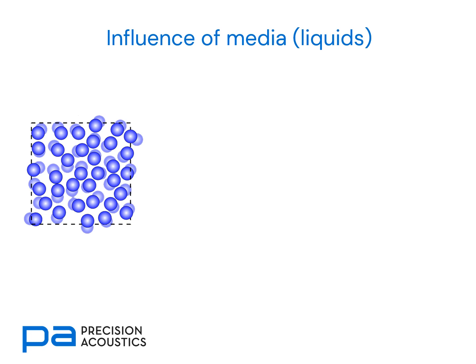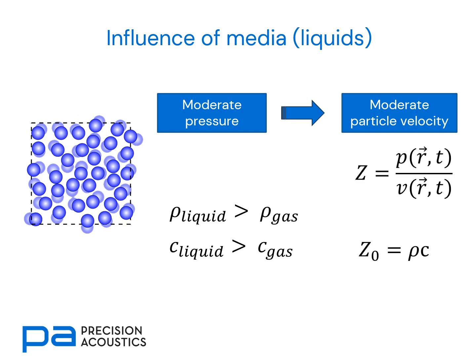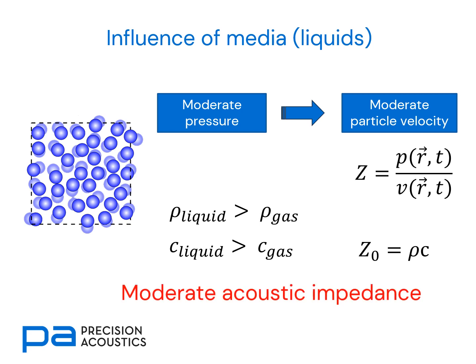Comparing now with liquids, where the particles are much closer together: a moderate pressure needs to be applied and we only get a moderate particle velocity, rather than the large particle velocity seen in a gas. The density of liquids is much greater than that of gases, and the wave speed of liquids is also greater. So, regardless of whether it's specific or characteristic impedance, we have a moderate acoustic impedance value for liquids.